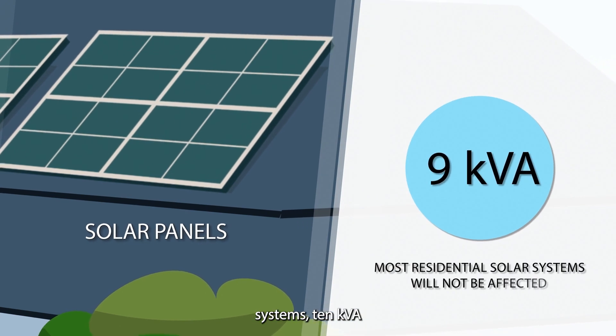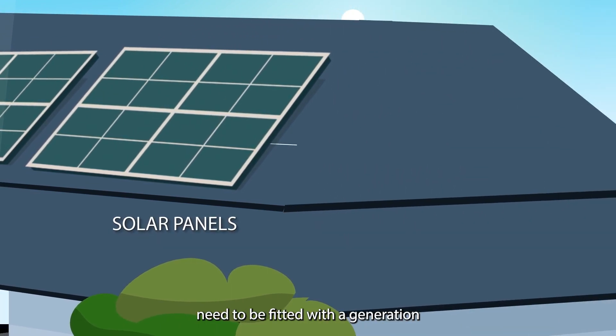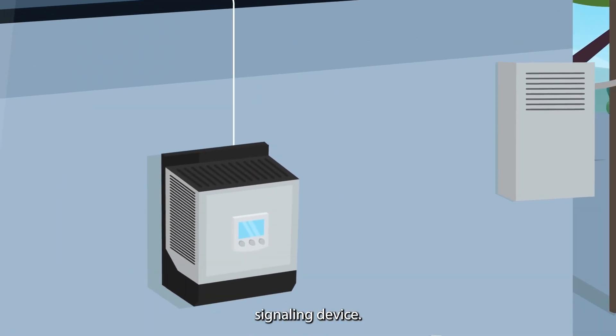new inverter systems 10kVA and above for generation systems like rooftop solar and battery need to be fitted with a generation signalling device.